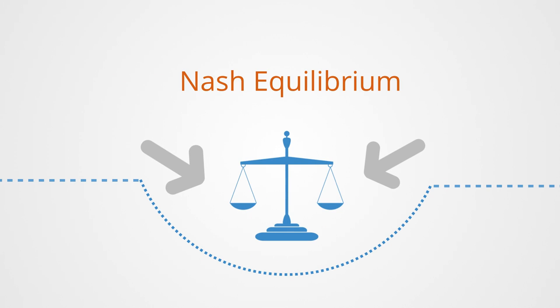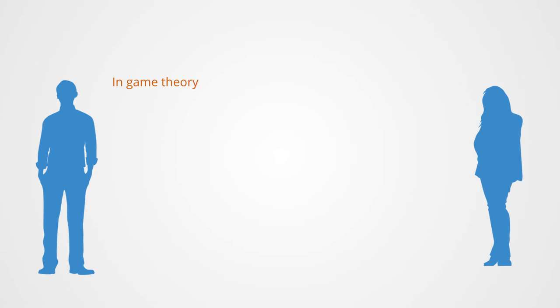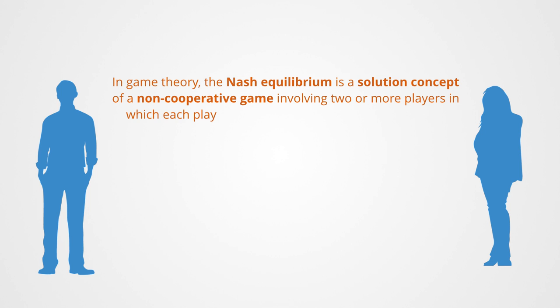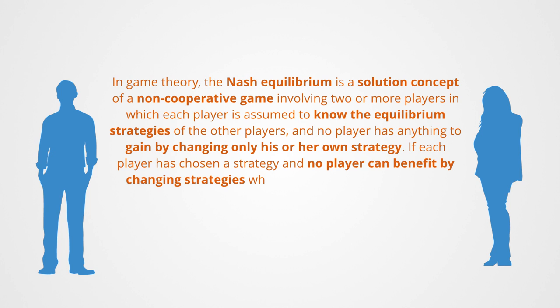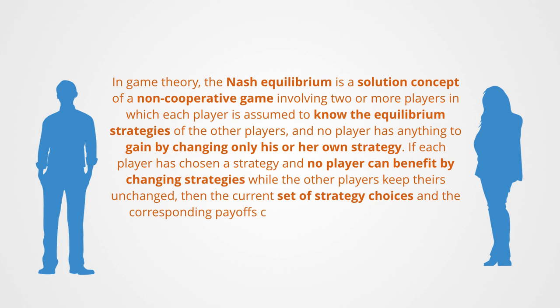This point of equilibrium in a game is called the Nash equilibrium, so named after the famous mathematician John Nash. In game theory, the Nash equilibrium is a solution concept of a non-cooperative game involving two or more players in which each player is assumed to know the equilibrium strategies of the other players and no player has anything to gain by changing only his or her own strategy. If each player has chosen a strategy and no player can benefit by changing strategies while the other players keep theirs unchanged, then the current set of strategy choices and the corresponding payoffs constitute a Nash equilibrium.